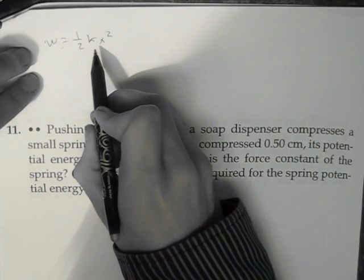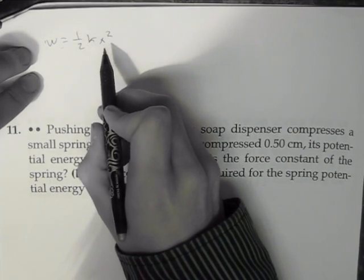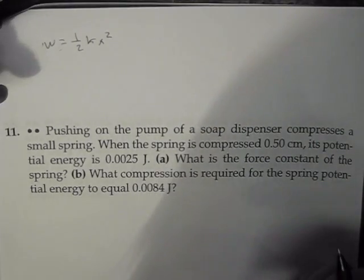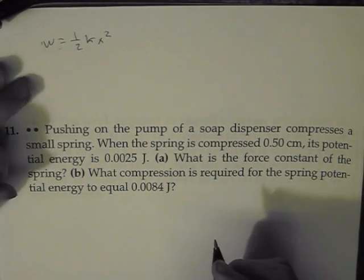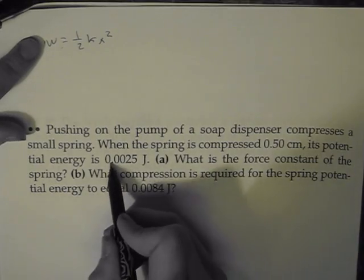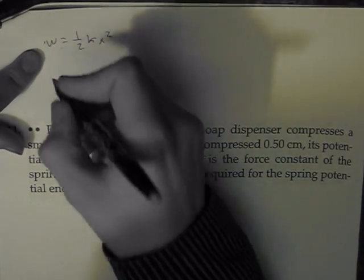Where k is the spring constant, and x is just the distance, the displacement—how much the spring is pushed, which is going to be 0.5 centimeters in this problem. And so work is obviously going to be 0.0025 joules here.